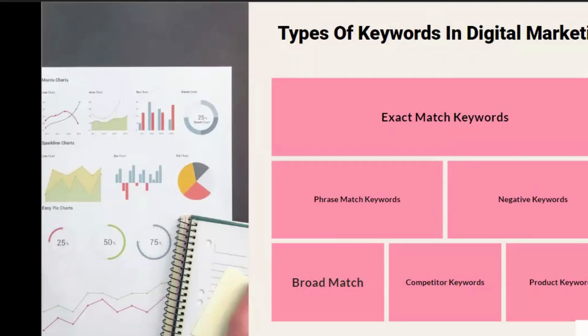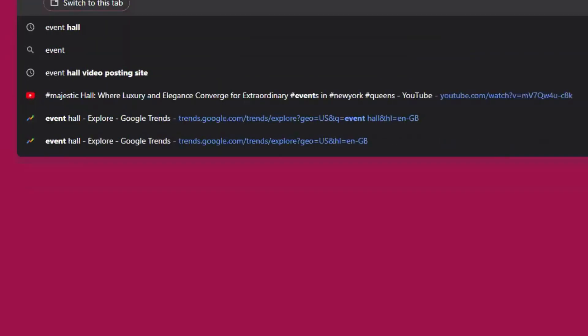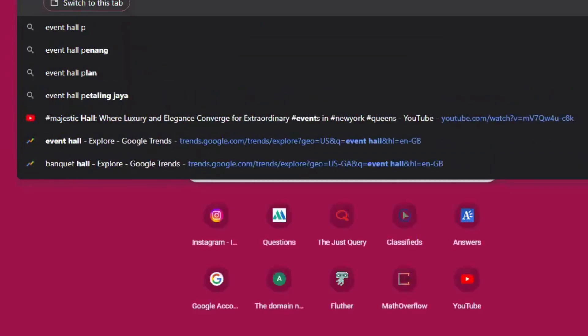What is phrase match keywords? These keywords generate advertising for search queries that include the exact phrase or a close version of the phrase you provide. For example, we can take event hall phrase word.